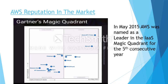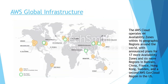This is a picture of the AWS global infrastructure. AWS cloud operates 44 availability zones within 16 geographical regions around the world, with announced plans for 17 more availability zones and six more regions in Bahrain, China, France, Hong Kong, Sweden, and a second AWS government cloud region in the US. They have very strong footprints around the globe, and I would suggest going with AWS for launching resources in a public cloud service provider.